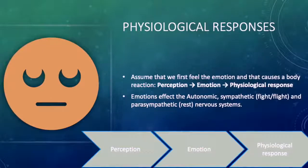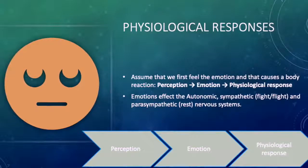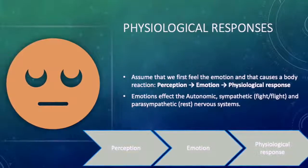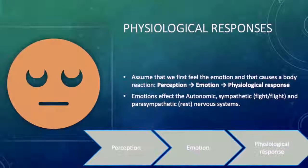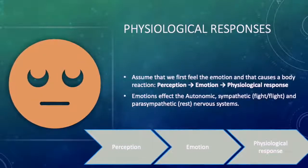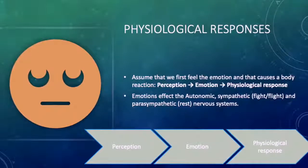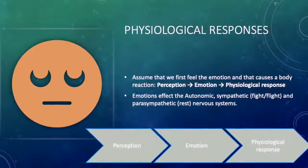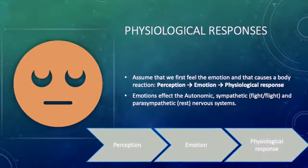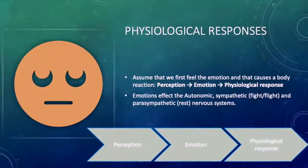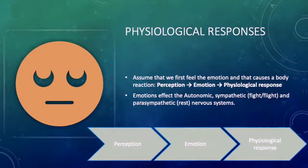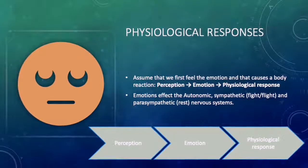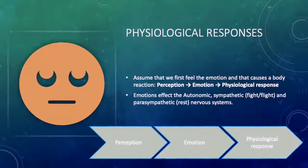In the physiological responses of emotions, we assume that we first feel the emotion, and that causes a bodily reaction. Here is a layout of the emotional reaction: it first stems from perception, then there is an emotion, and then the emotion causes us to act out in a physiological response.